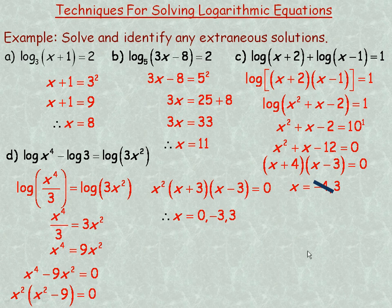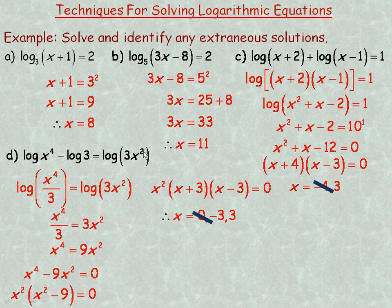Just as we can't take the logarithm of a negative, we also can't take the logarithm of 0. If we put 0 into the equation, we'd have a log of 0, and there's no power you can raise 10 to that gives 0. So x equals 0 is an extraneous root and we discard it. Negative 3 and 3 are both valid solutions because negative 3 raised to the fourth power is positive 81, and negative 3 squared is positive 9 — so the arguments of the logarithms remain positive.